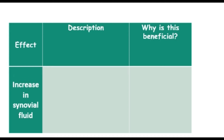We actually get an increase in synovial fluid. If you've watched the previous revision sessions, we've looked at different joints and particularly synovial joints. So we get an increase in synovial fluid. In your exam you need to be able to describe what is going on and also why it's beneficial. There's a table on screen you can try to fill out in your own time — feel free to pause the video and give it a go, then we'll look at the answers. Your skeletal system is going to make some response to exercise, and the first thing it's going to do is produce more synovial fluid in the synovial joints.